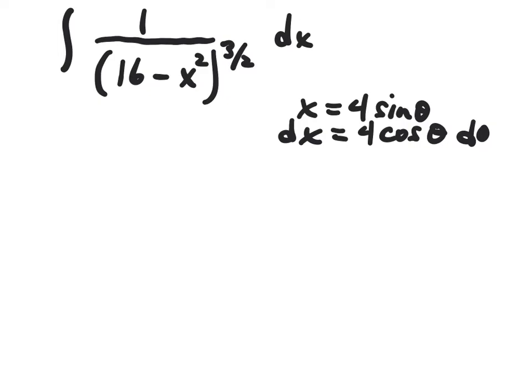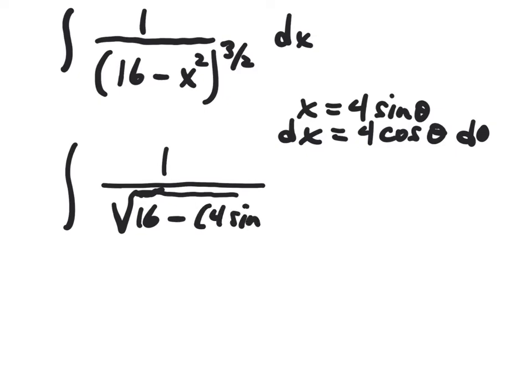Substituting all this information into the original problem, and I'm also going to change the parenthesis to a square root radical. x squared becomes 4 sine theta quantity squared. The dx from the original problem is 4 cosine theta d theta, and I've still got to remember to cube that.